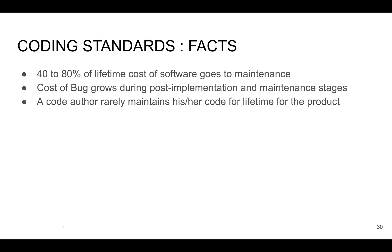From 40 to 80% of the lifetime cost of software goes to maintenance. Developing it took just some period of time, and after that we leave the project for maintenance and support. The development stage is finished, and then there will be usage, sometimes bugs that should be fixed, and changes that should be implemented — and mostly this time goes to maintenance.